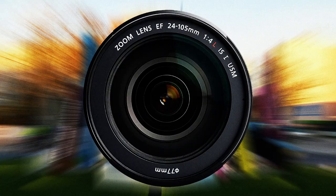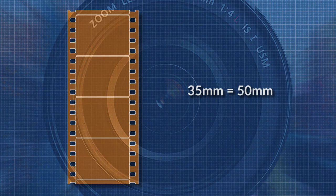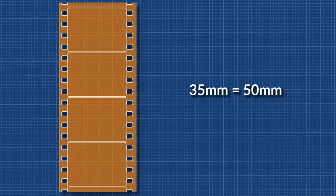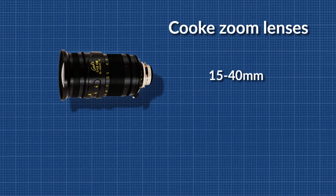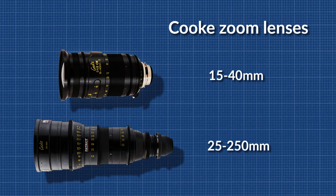Now let's look at some examples of zoom lenses. For 35mm, remember that 50mm is the normal focal length. I'll give you the example of the great Cook zoom lenses, which include 15-40mm, a wide angle through normal, and 25-250mm, a moderate wide angle through telephoto. These are high-end, very expensive lenses that are normally rented.